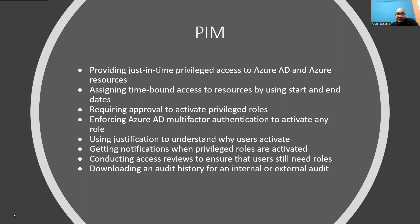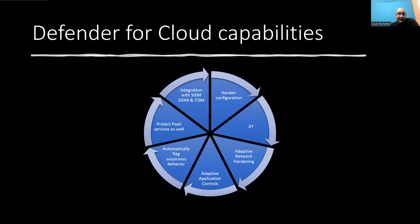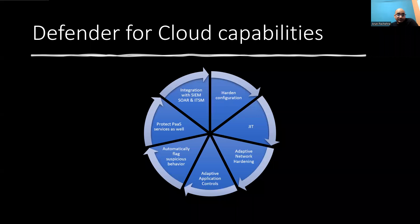Defender for Cloud helps secure infrastructure through several features. The first is hardening the configuration — assigning security initiatives to subscriptions and reviewing the secure score leads to hardening recommendations built into Defender for Cloud. Defender for Cloud periodically analyzes the compliance status of resources to identify potential security misconfigurations and weaknesses, then provides recommendations on how to remediate those issues, including step-by-step guidance you can click to fix.